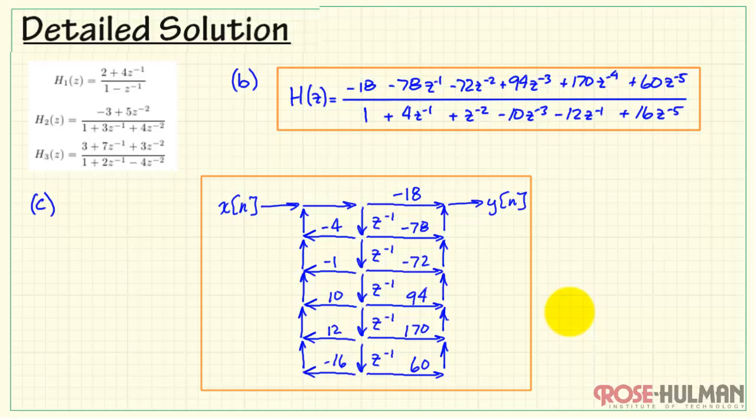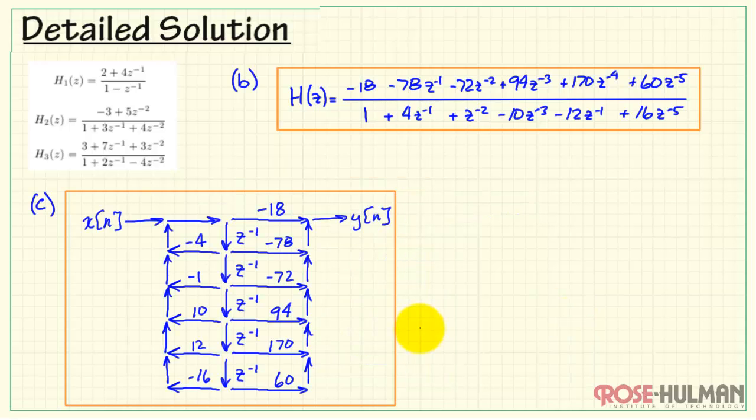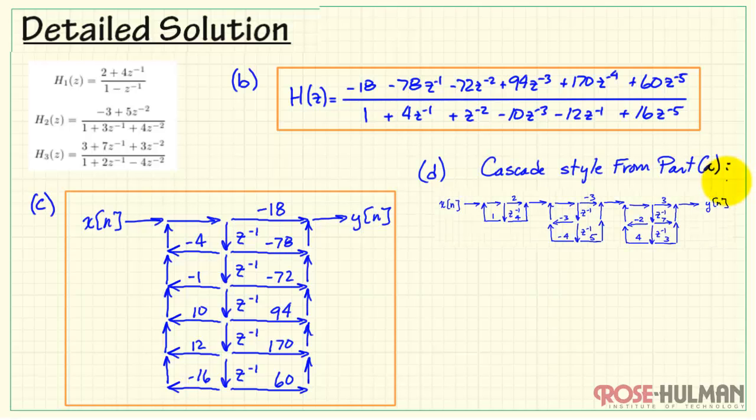In part d, we want to compare to the cascade form from part a. Let's get that recalled from the past. And comparing these two structures that we know are equivalent from a mathematical standpoint, first thing we observe is that they have the same number of delay elements. That means that the amount of memory associated with delays is the same between the two. Next, we can consider the actual values of the coefficients. I see 170.